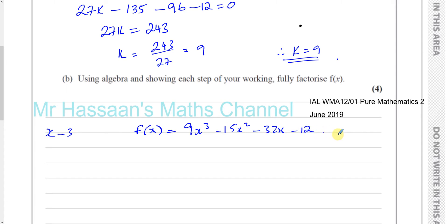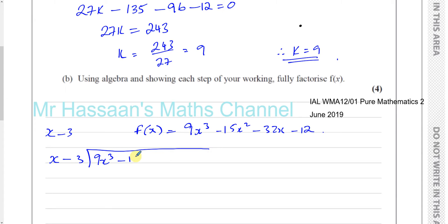There are different ways of doing this. One way is algebraic long division, where you put the factor on the outside and make sure all terms are present: the x cubed term, the x squared term, the x term, and the constant. If any were missing, you'd put a zero in its place.